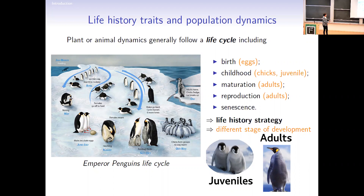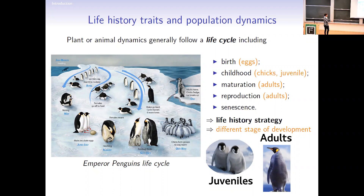If you look at this example of emperor penguins — I chose this one because I work on emperor penguins, thanks to Mark too. I found my collaborator at the first Banff workshop he organized, which was nice. You can split this population into two types: the juveniles that do not reproduce, and the adults that do reproduce.